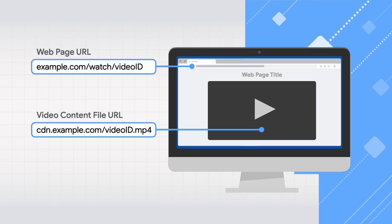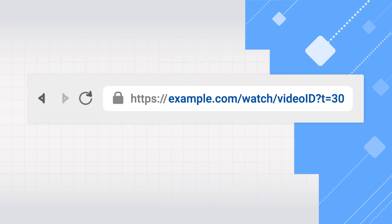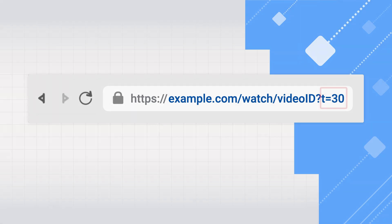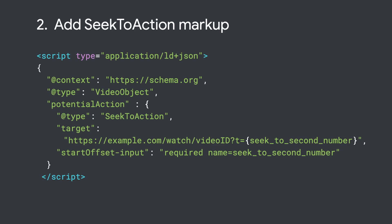The links that Google displays in search results are the URLs for your web pages where the videos are embedded. In order to support key moments, these video page URLs must support a parameter that begins playback from a specific number of seconds into the video. For example, in this URL, the t=30 parameter indicates that the video should start playing from the 30-second mark. You just need to add schema.org markup to tell Google where to insert the number of seconds in your URL. Within your video object markup, include a potentialAction property. This property should be of type SeekToAction and have a target property that contains the URL for your video page, with a placeholder for where Google can insert the number of seconds to skip to in the video. That placeholder is the seekToSecondNumber string that you see in this example.